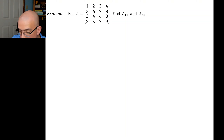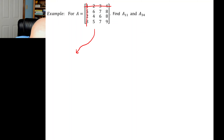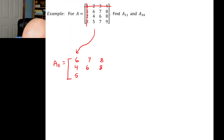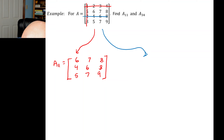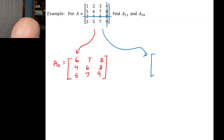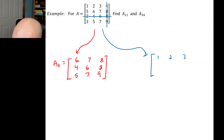For A11: cross out row 1 and column 1 to get the submatrix with entries 6, 7, 8 and the appropriate remaining elements. For A34: cross out row 3 and column 4. The original was 4x4, so the submatrix is 3x3 — one row and one column are reduced. The surviving entries are 1, 2, 3, 5, 6, 7, and 3, 5, 7.